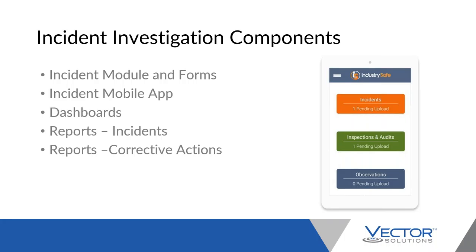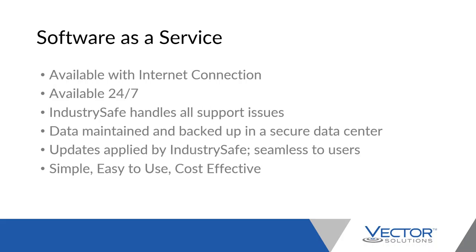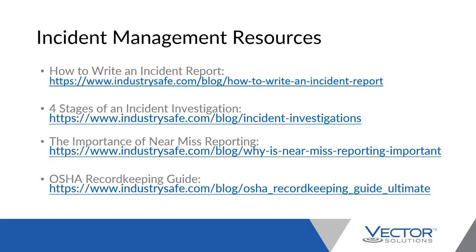Most organizations have a particular workflow for how they want incidents conducted. Software can help manage who investigates the incident, who writes the report, who fills out what data, when people are notified, and when the incident is closed. Some of that workflow is done through email notifications and alerts. With Industry Safe, you can store all your documents and photos, export and query data, and use e-signatures for approval and sign-off.